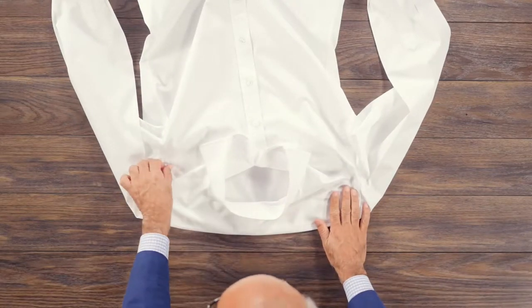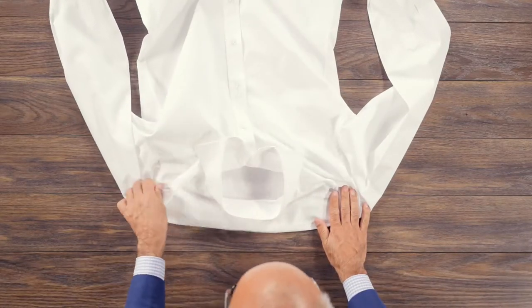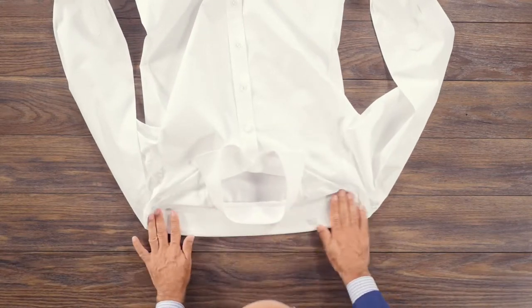After holding the shirt up by the yoke on the left and right sides, lay the shirt button side down on the table exactly as you were holding it.